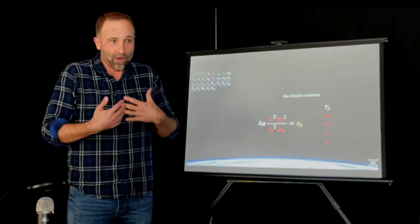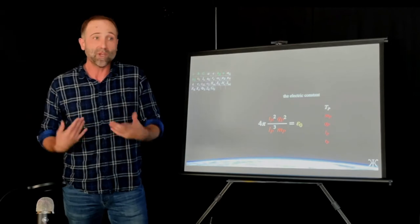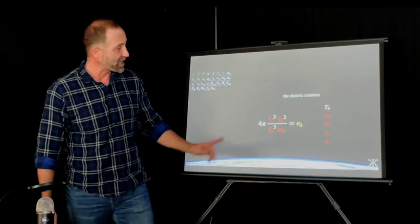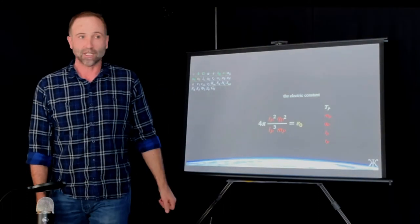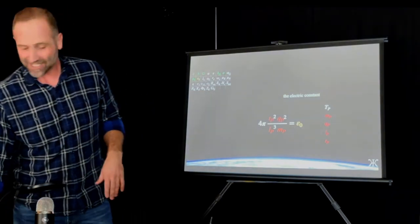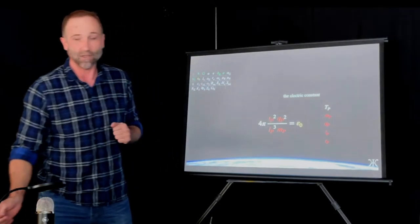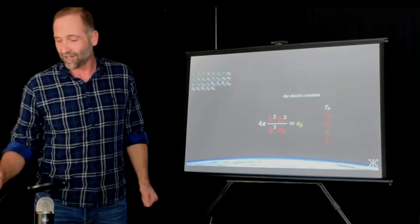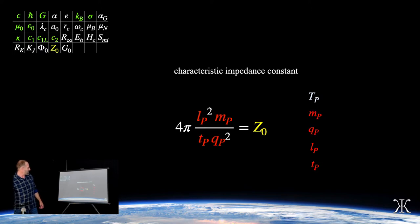Even if you've never studied these constants and don't have a real understanding of how they characterize our reality, isn't it interesting that the only thing we needed to do to return the value of each is to know these balancing conditions and put them in this spherical arrangement? There's a geometric arrangement stamped into reality, characterized by this equation and all the ones listed so far. What are they characterizing? The actions of reality — the ones we've measured, literally. The Coulomb constant, the first radiation constant, the spectral radiance constant, the second radiation constant, and the characteristic impedance constant.